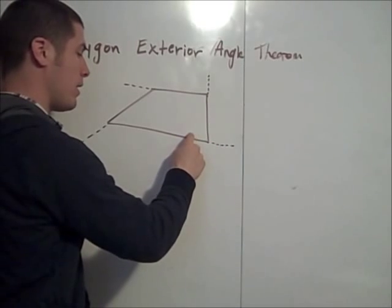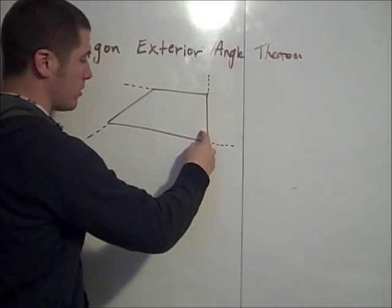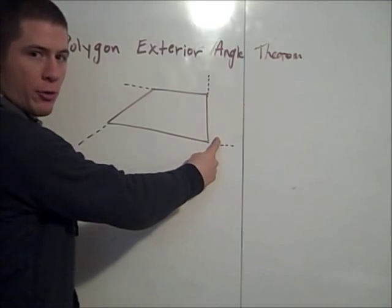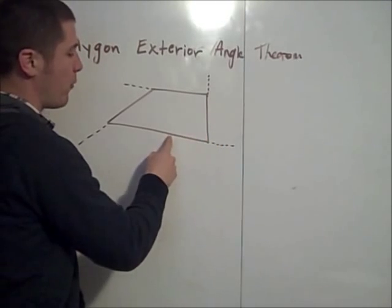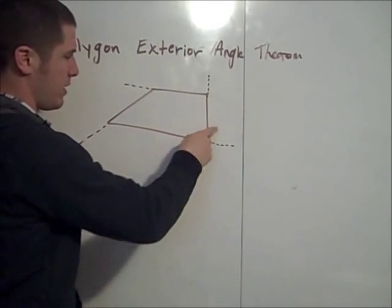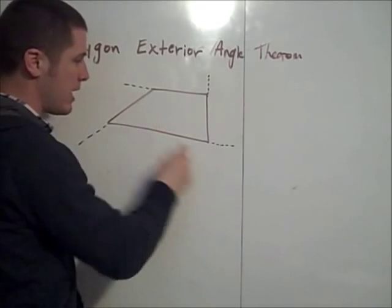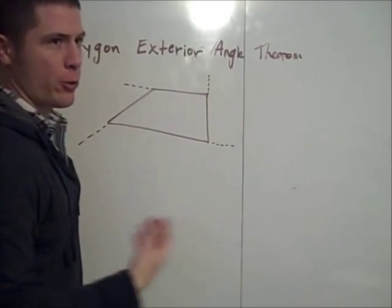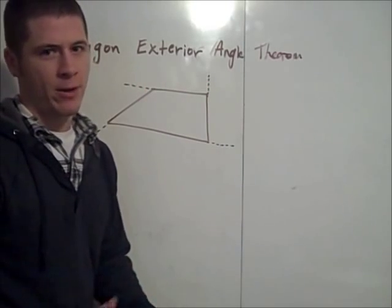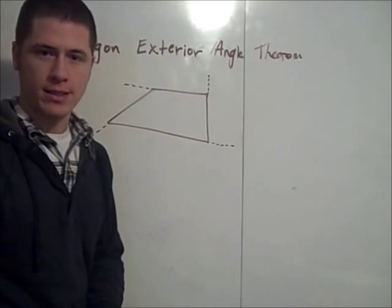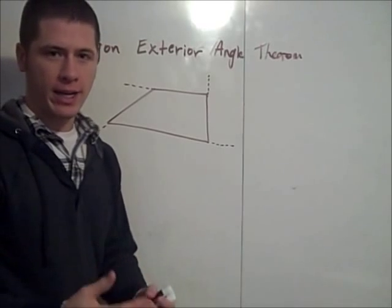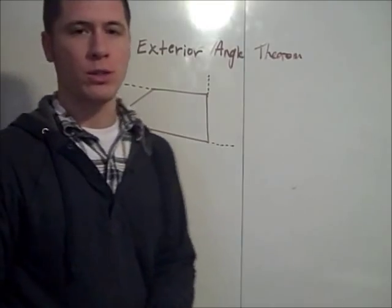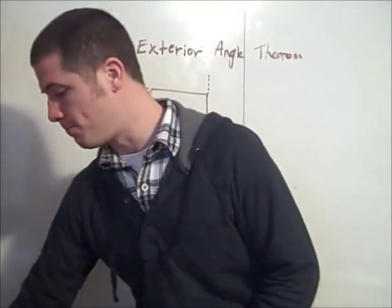That is, if we take the measure of the interior angle and add the measure of the exterior angle, we get 180 degrees. For an n-gon — in this case a quadrilateral with four sides — there are four of these straight angles. For a triangle there are three, for a pentagon there are five, for a hexagon there are six, and for an n-gon there are n straight angles, each composed of an interior angle and an exterior angle.